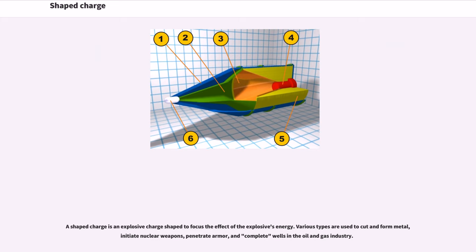A shape charge is an explosive charge shaped to focus the effect of the explosive's energy. Various types are used to cut and form metal, initiate nuclear weapons, penetrate armor, and complete wells in the oil and gas industry.